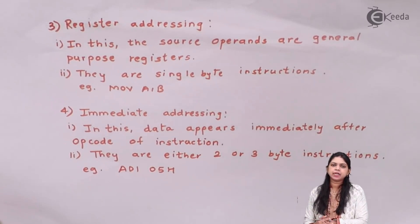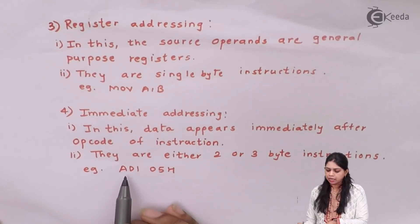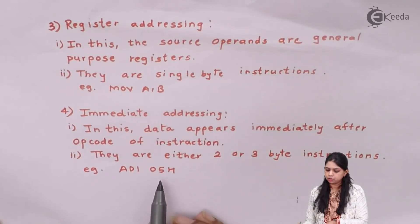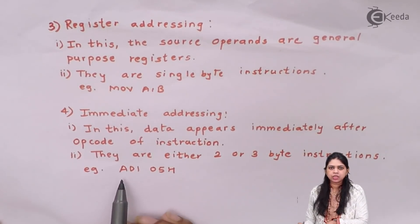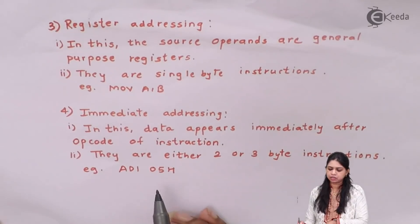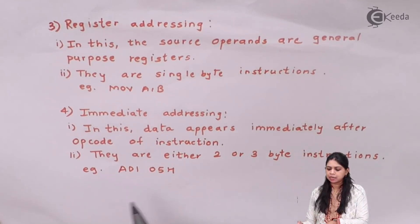For example, MOV A, B — the content of B goes to A, so the source operand is a general-purpose register. Next we have immediate addressing mode. In immediate addressing mode, the data appears immediately after the opcode of the instruction. For example, ADI 05 — after the opcode, the data 05 comes directly. You add 05 with the accumulator; the data is not in any register but is directly specified.